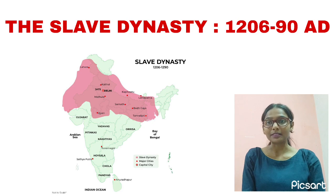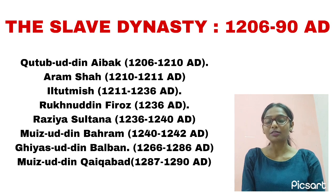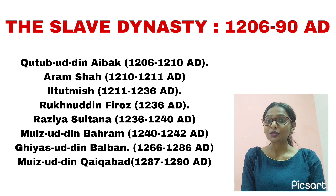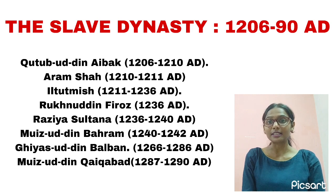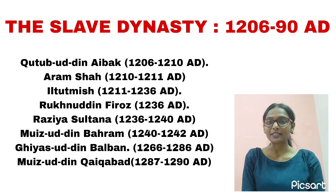After Qutbuddin Aibak, his son-in-law Shamsuddin Iltutmish succeeded the throne. He passed on the reign of Delhi to his daughter Razia, as she was more capable than his sons. She was the only women ruler of the Delhi Sultanate to rule Delhi. In 1266, after Razia, Balban, the chief advisor of her brother, ruled Delhi. He was the last of the Slave dynasty.